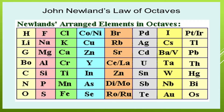Looking at the table — the classification given by John Newland — he arranged the elements in octaves: hydrogen, lithium, beryllium, all in a row. The eighth element from hydrogen is fluorine.